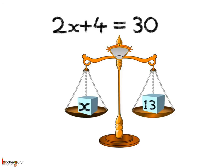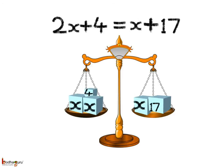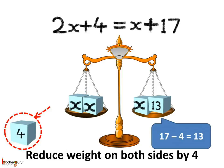Now, coming to the last algebraic equation, which is 2x plus 4 is equal to x plus 17. Let's put the weight 2x plus 4 on the left hand side pan, and weight equal to x plus 17 on the right hand side pan, and we need to find the value of x. Both pans have x.